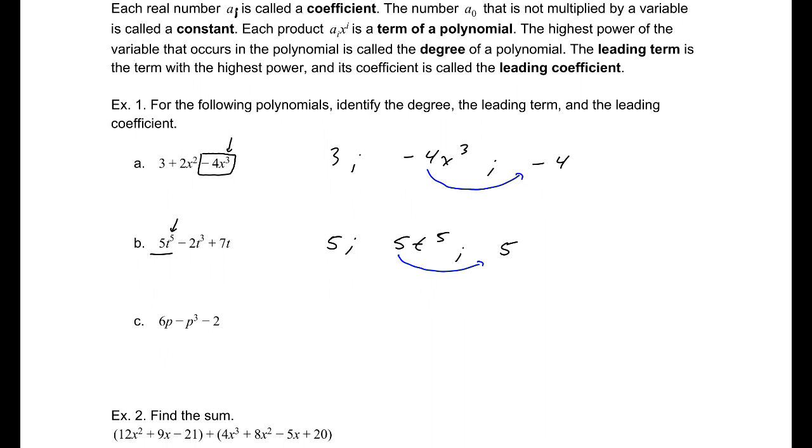Part C, the degree is 3, p cubed. So, minus p cubed, negative p cubed, is our leading term. And then the leading coefficient is negative 1 there.